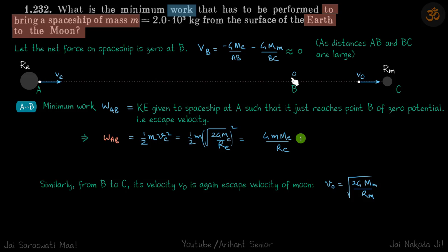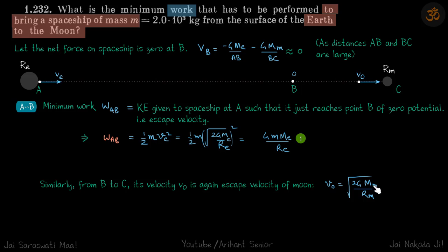Similarly, when the spacecraft's potential is zero at B and it falls toward the Moon's surface, its velocity will be the escape velocity of the Moon — just as from zero potential to the Earth's surface gives Earth's escape velocity. So from B to C, the velocity v₀ is the escape velocity of the Moon: v₀ = √(2·G·M_M / R_M), analogous to v_E = √(2·G·M_E / R_E).